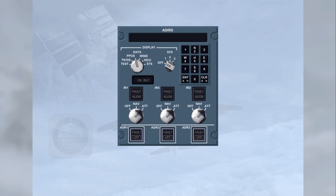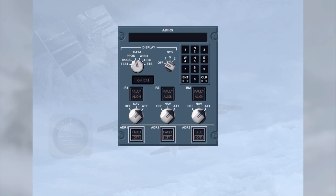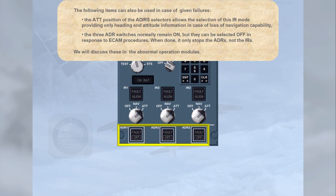The following items can also be used in case of given failures. The ATT position of the ADR selectors allows selection of the IR ATT mode, providing only heading and attitude information in case of loss of navigation capability. The three ADR switches normally remain on, but they can be selected off in response to ECAM procedures. When done, it only stops the ADRs, not the IRs. These will be discussed in the abnormal operation modules.